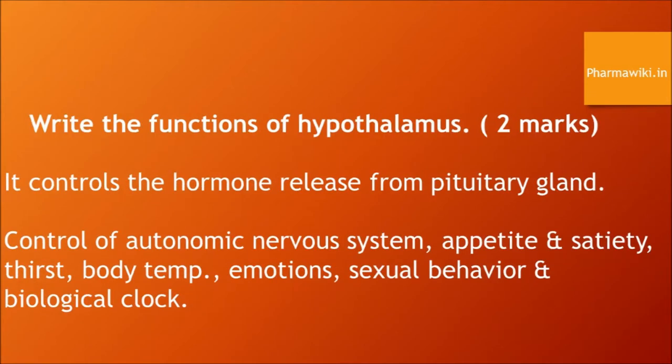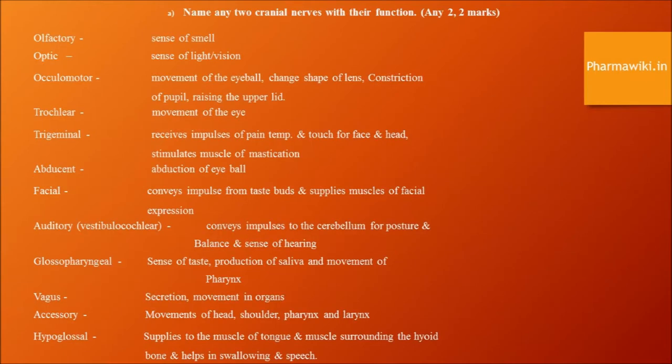Name any two cranial nerves with their functions. Olfactory nerve: sense of smell. Optic nerve: sense of light or vision. Vagus nerve: secretions and movement in organs. Glossopharyngeal nerve: sense of taste, production of saliva, and movement of the pharynx.